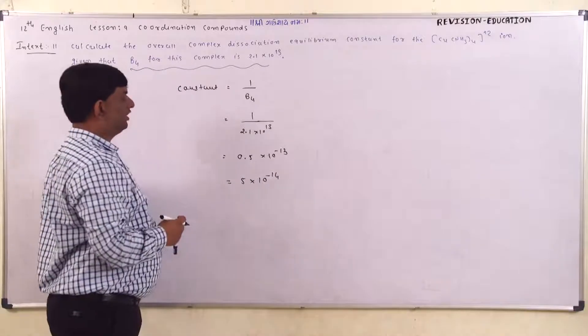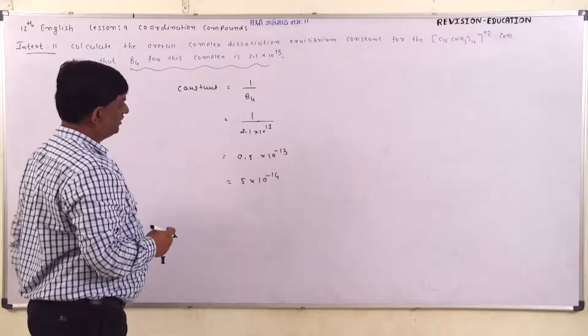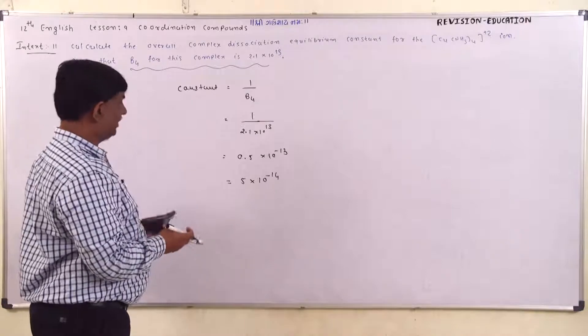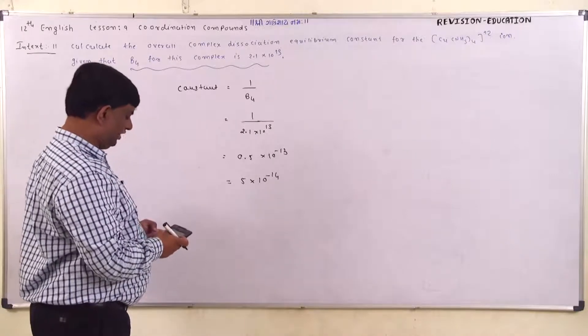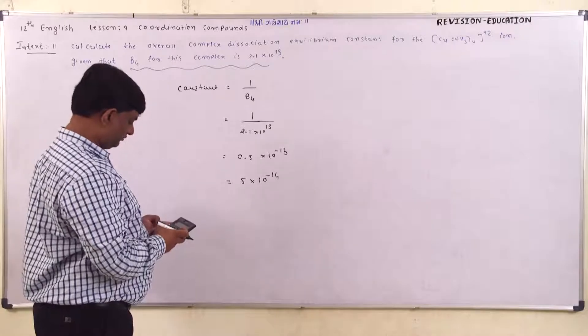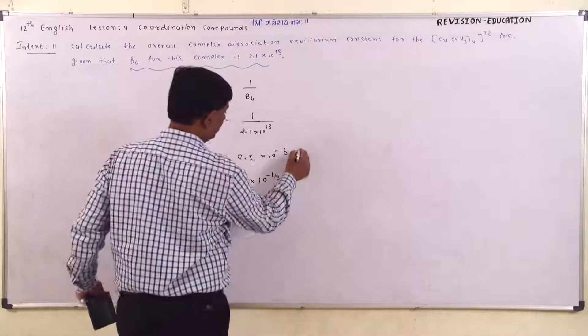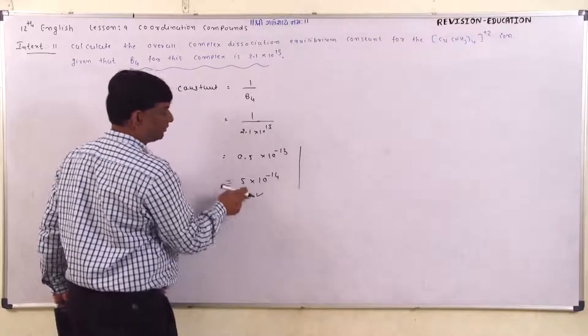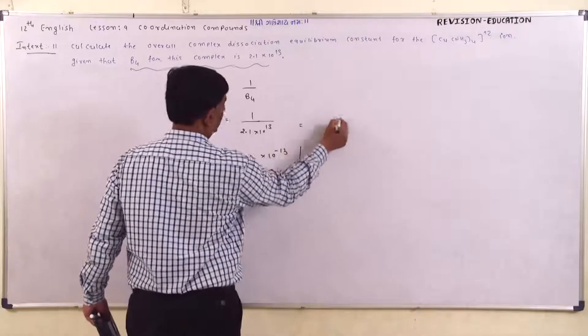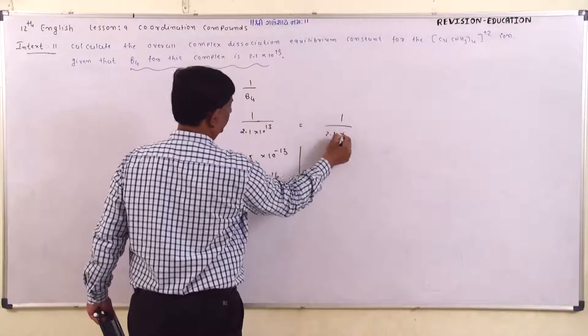Let me use the calculator for the exact dissociation constant. Calculate 1 divided by 2.1 to get the approximate answer. 1/(2.1 × 10¹³).